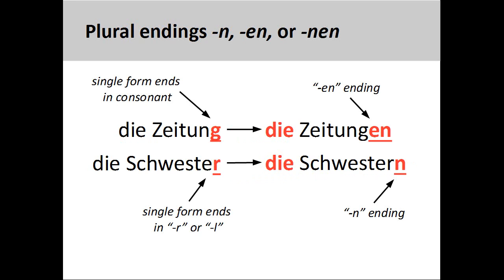The fourth group consists of nouns that add -n or -en for a plural ending. The nouns in this group are mostly all feminine. If the noun ends in a consonant such as Zeitung, newspaper, then -en is added.